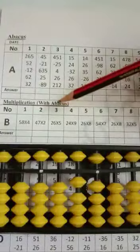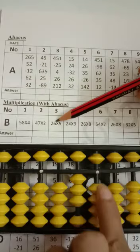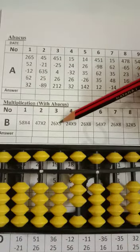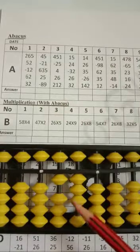Question number 3: 26 multiply by 5. 5 times 6 is 30. 30. Then 2 times 5 is 10. Your final answer will be 130.